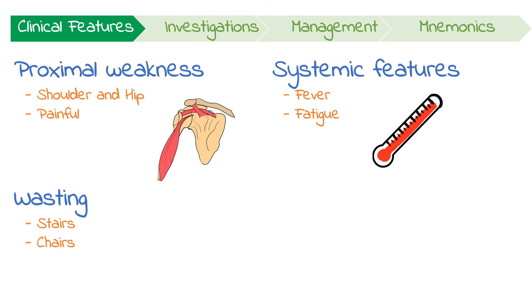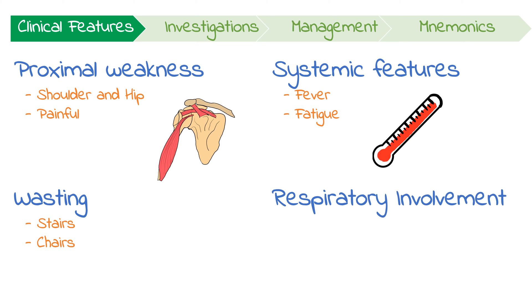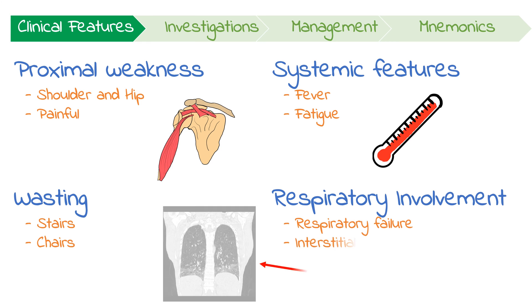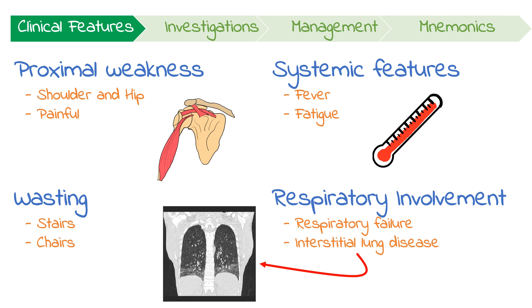Without treatment, there's often progressive involvement of the pharyngeal muscles and the muscles of respiration, leading to dysphonia and respiratory failure. It's also important to remember that interstitial lung disease can occur in up to 30% of patients.